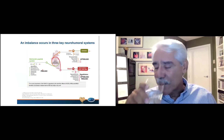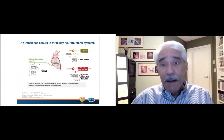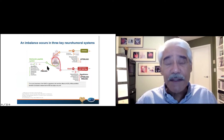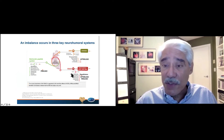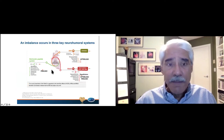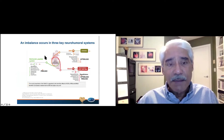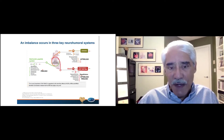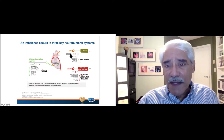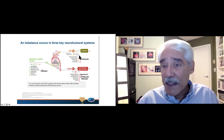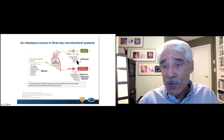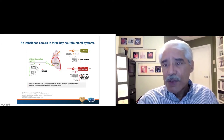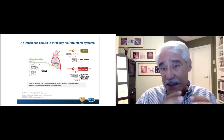What else happens in heart failure? There is activation of the neurohumoral system. We knew about activation of the sympathetic nervous system and the renin-angiotensin-aldosterone system. We have also learned that there is a third humoral system — the natriuretic peptide system — which is also abnormal in heart failure. Sympathetic nervous system activation releases epinephrine and norepinephrine, stimulating alpha, beta-1 and beta-2 receptors, leading to vasoconstriction, increased RAS activity, vasopressin release, increased heart rate, and increased contractility, with an increase in afterload and increased peripheral vascular resistance.